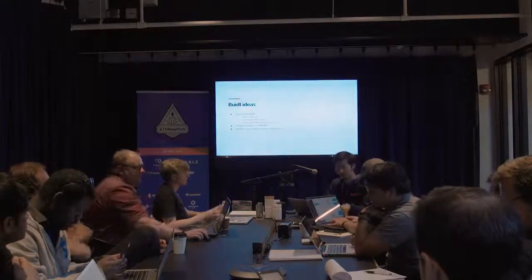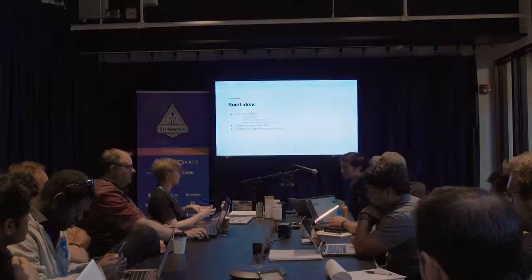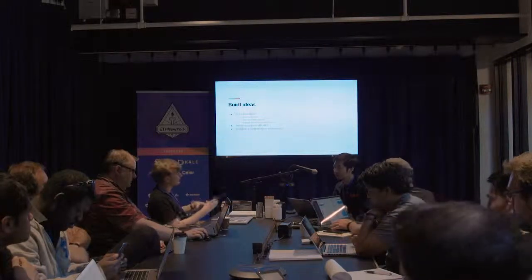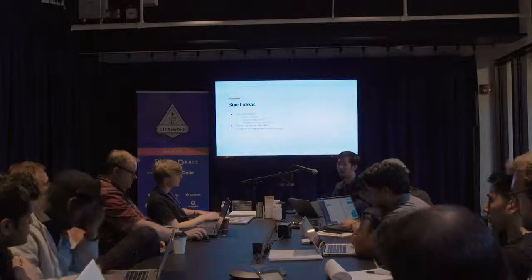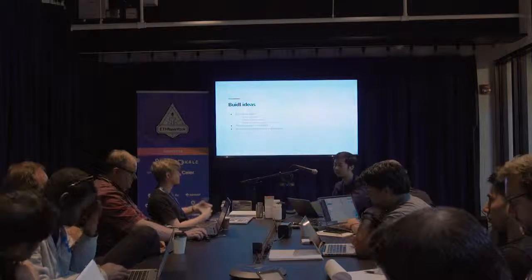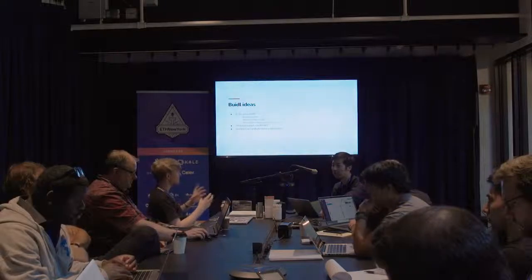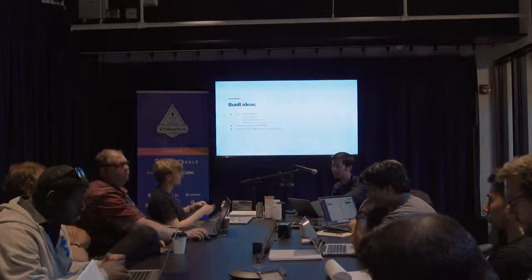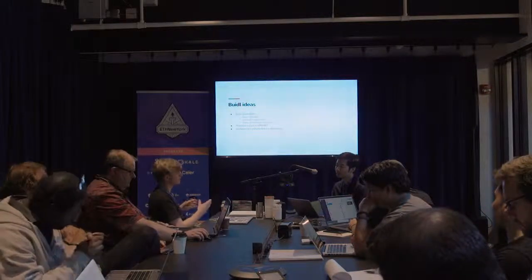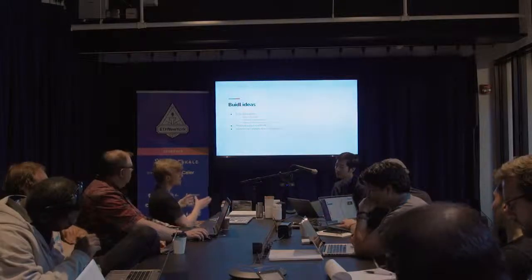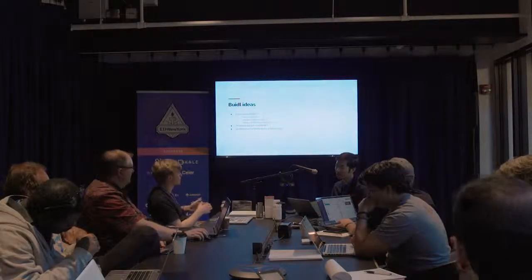Could you use a model like 0x where the initial UMA participant creates a maker order and a counterparty creates the taker? In 0x, the maker creates a signed JSON message — a datagram — and the taker places that message on-chain, which executes the trade. Could the first participant in the UMA swap create an off-chain message indicating their intent to participate, and then some other party takes that message and puts it on-chain to initiate the swap?